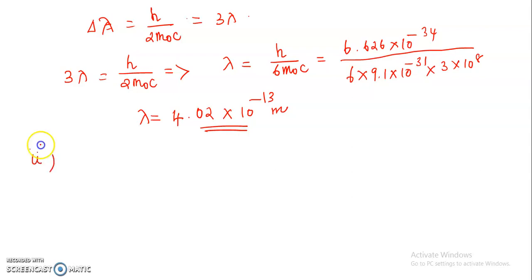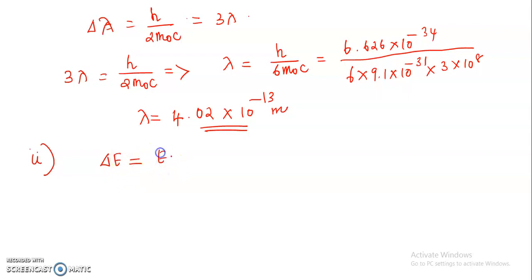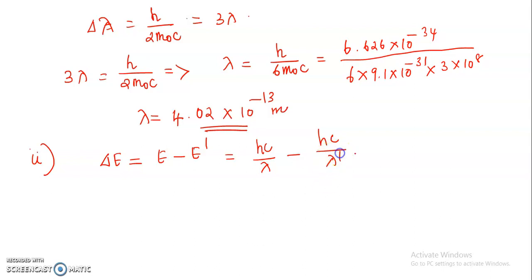For the second part, we calculate the energy of the recoil electrons. Delta E equals the energy lost by the incident photons, so delta E equals incident photon energy E minus scattered photon energy E dash. That is equal to HC divided by lambda minus HC divided by lambda dash. Here, lambda dash equals 3 times lambda, so it becomes HC divided by lambda minus HC divided by 3 lambda.